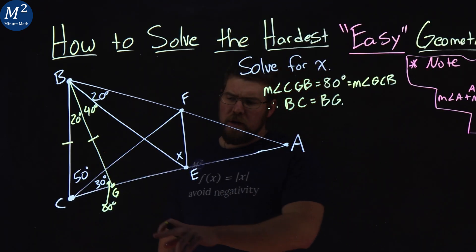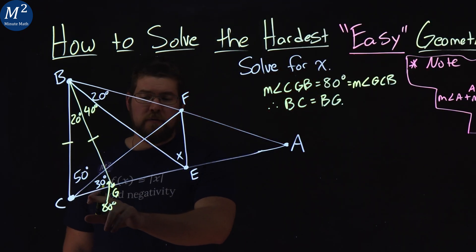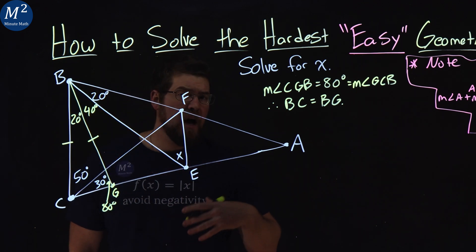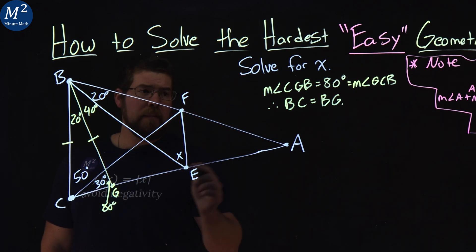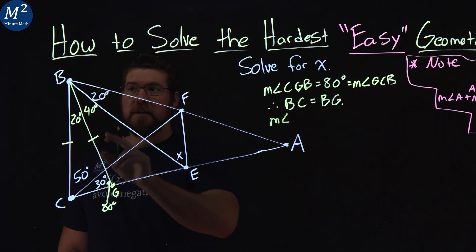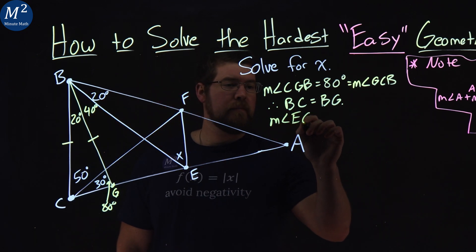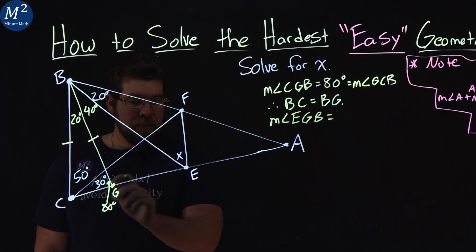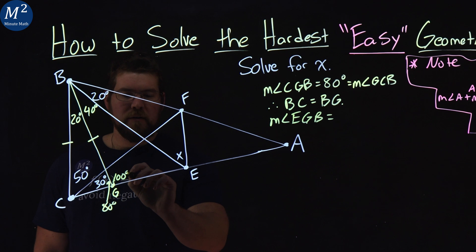Now what we're going to do is I'm going to look at this 80 degrees right here we said for CGB. We know a straight line adds up to be 180 degrees, and so the measurement of angle here, EGB, has to add up to be 180. We subtract 80 from that, and we get 100 degrees here.